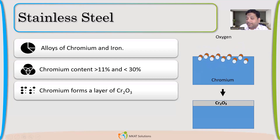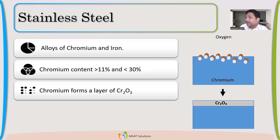The Cr2O3 layer becomes a kind of automatic coating on the surface — very bright and very clean, so it looks beautiful. That is why we see stainless steel shining. If carbon steel and stainless steel are kept together, you will be able to identify which is stainless steel because of its color — it is very bright — and that is because of Cr2O3.